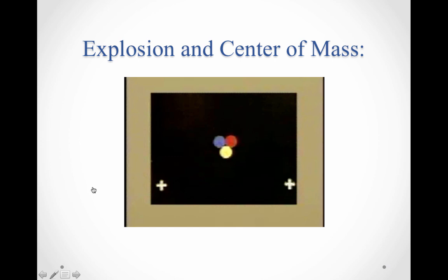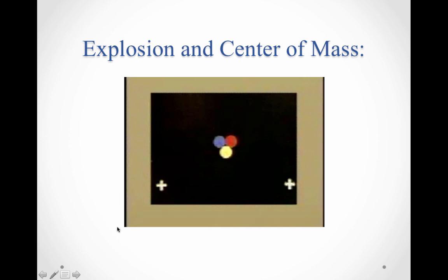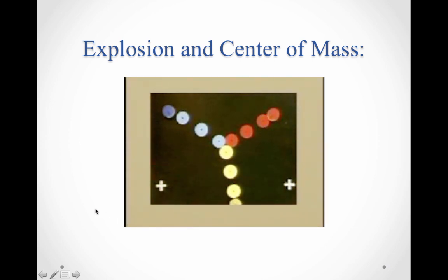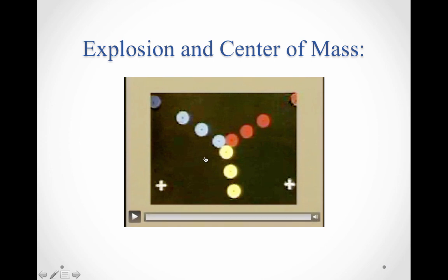Let's take a look at a video of an explosion between three pucks. They are all magnetically repelling from each other, and when released they'll explode away from each other — they all have equal mass, so they'll all move away with equal momentum. At any given point, their center of mass is right in the center. As the three pucks fly off at different positions, they would still balance in the center. The center of mass was motionless to begin with and remained motionless even after the explosion.